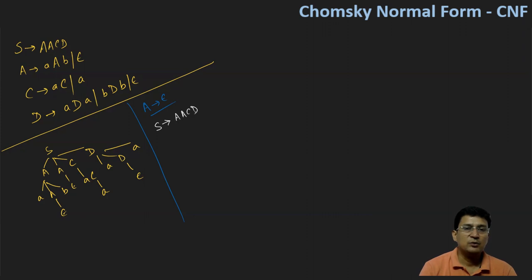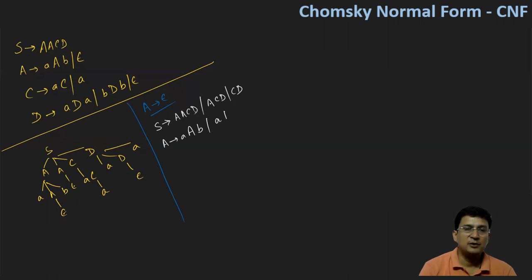We remove A produces epsilon without changing the nature of the grammar. S produces AACD — we won't change this production. But now we will substitute epsilon in the first A, so it will become ACD. Then we substitute epsilon in the second A, so ACD comes out again. If we put epsilon in both A positions, it will come out to CD. Then A produces small a, capital A, and B. We substitute epsilon in A, so this becomes aB.